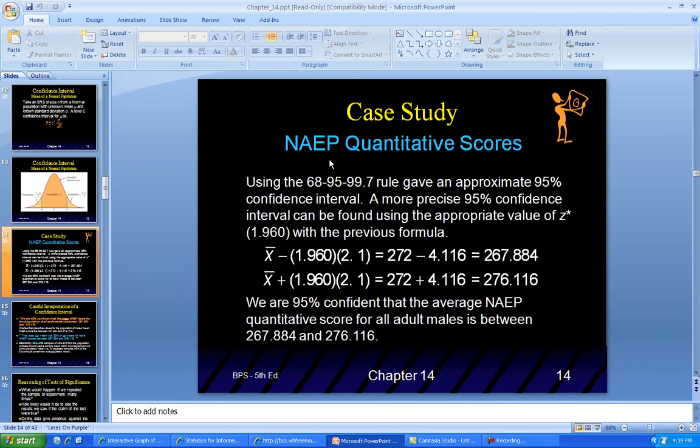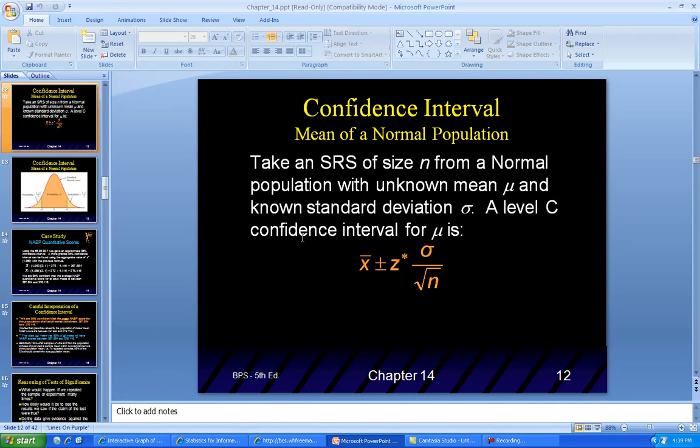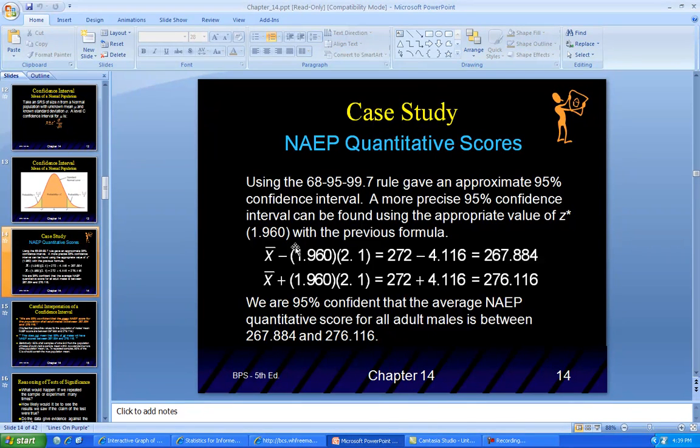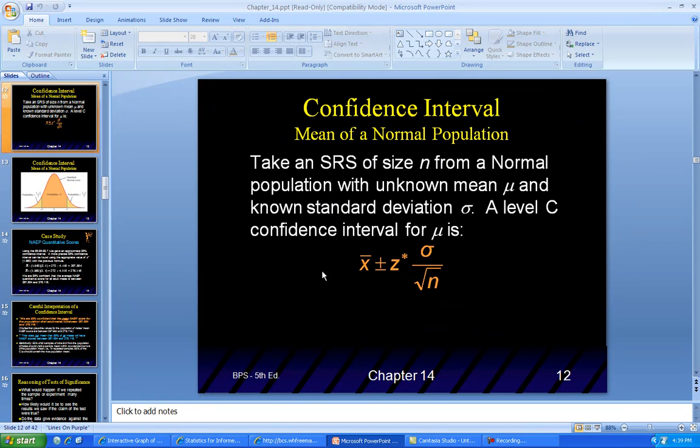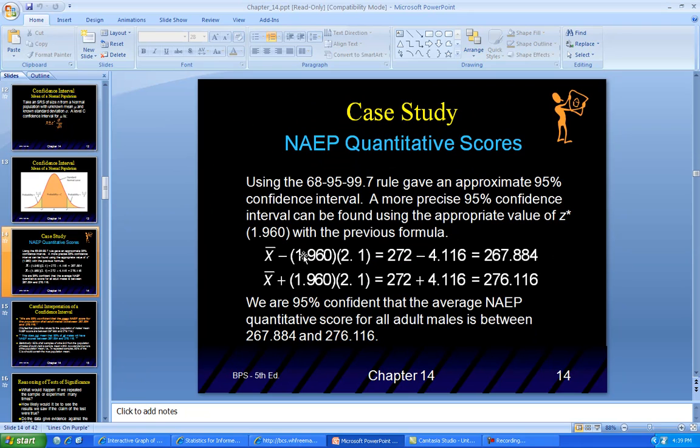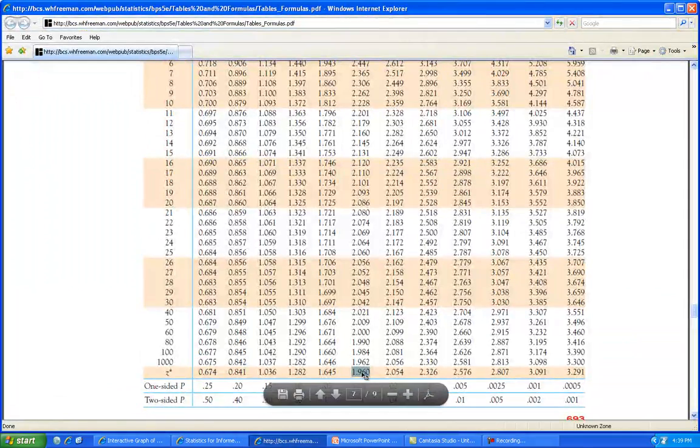Let's look at the same problem with the NAEP quantitative scores. Now we're going to use the 68-95-99.7 rule. They gave us approximately 95%, but a more precise 95% is when we use z-star. We're going to use this equation. x-bar minus—we'll do the minus first, then the plus—minus 1.960, which comes from right there.